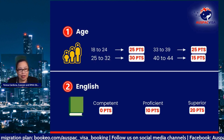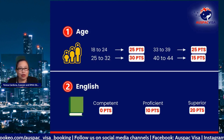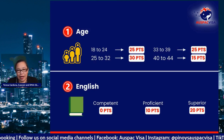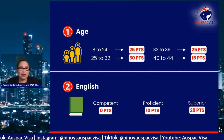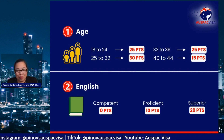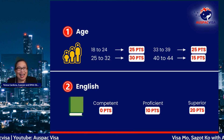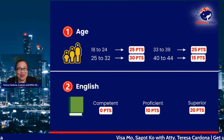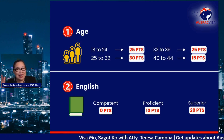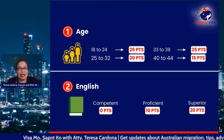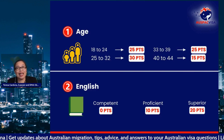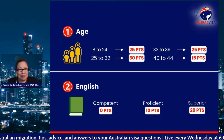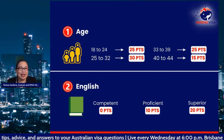In terms of points calculation for age: age 18 to 24 gets 25 points; age 25 to 32 gets 30 points; age 33 to 39 gets 25 points; and age 40 to 44 gets 15 points. Note that the cut-off for skilled migration to Australia is age 45 — unlike New Zealand which goes up to 55.